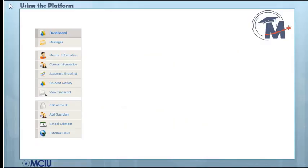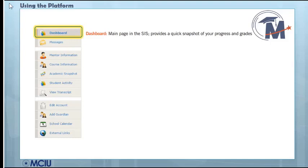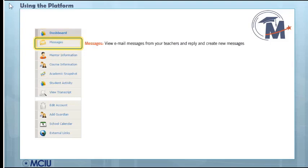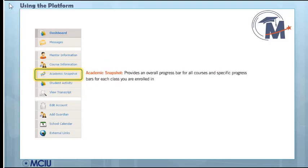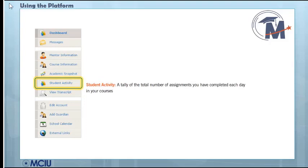On the left side of the screen, you will see a menu of other pages available in the Student Information System, or SIS for short. The dashboard provides a quick snapshot of your progress and grades. Messages will show all your emails from your teachers and allow you to send messages. The Course Information screen will include all information on your courses, including course descriptions and teacher contact information. The Academic Snapshots screen provides an overall progress bar for all courses. Finally, the Student Activity screen will show how many assignments you have completed for a course.